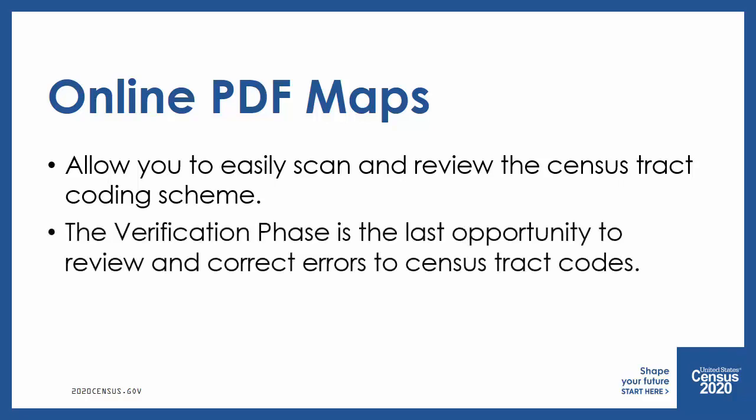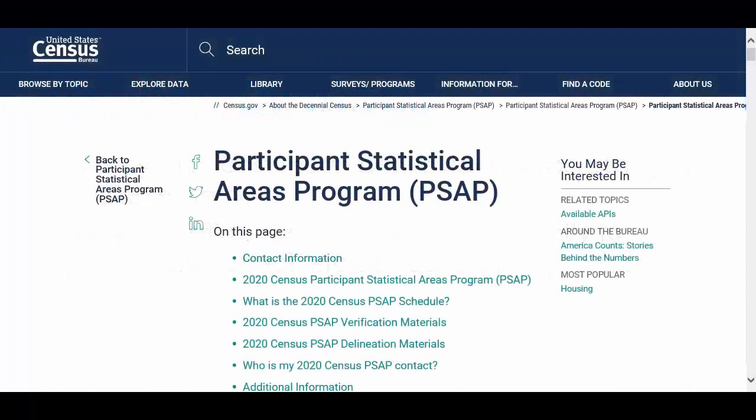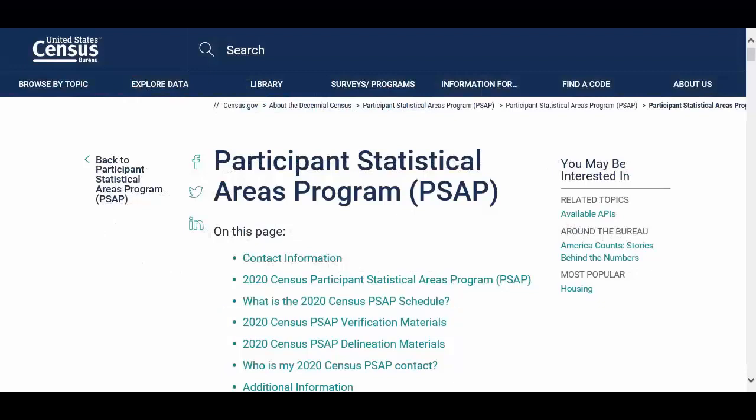The verification phase is the last opportunity for you to review and correct errors to census tract codes before the final 2020 tabulation geography is created. These maps are found within the 2020 census PSAP verification materials section on the PSAP website, as we reviewed earlier in the training demonstration.